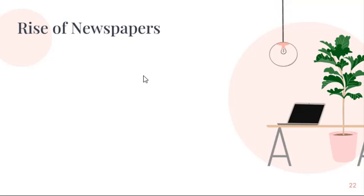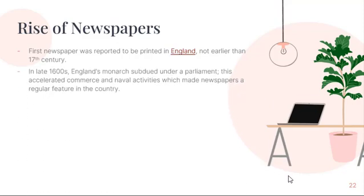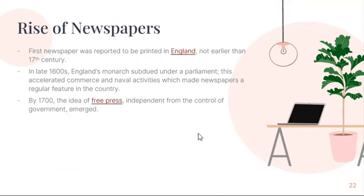Rise of Newspapers. The first newspaper was reported to be printed in England, not earlier than the 17th century. Merchants and travelers were the usual buyers of these papers, since they were interested in what was going on economically and politically in other countries. In the late 1600s, England's monarch was subsumed under a parliament, which accelerated commerce and naval activities, making newspapers a regular feature in the country. By the 1700s, the idea of free press, independent from the control of government, emerged.